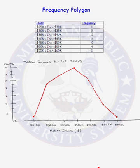Every frequency polygon has to start at 0 and has to end at 0. So how do we do that? We start our frequency polygon at the midpoint of the class that would be directly to the left of our lowest class. So here we would have $22,500, and our frequency polygon ends at the midpoint of the class directly to the right of our greatest class. That would be at $62,500.